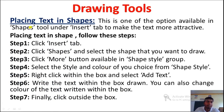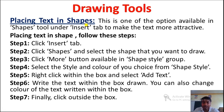Then we have placing text in a shape. Suppose you want to write something inside a shape — how to do that? For that, we also have steps. In this section we will also see how to change the color of the shape, the color of the edge, and how to increase the thickness. This is one of the options available in the shape tool under the Insert tab to make the text more attractive.